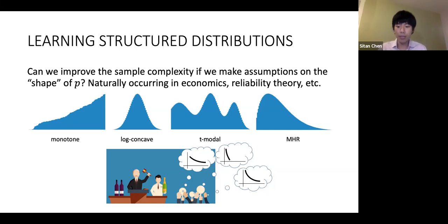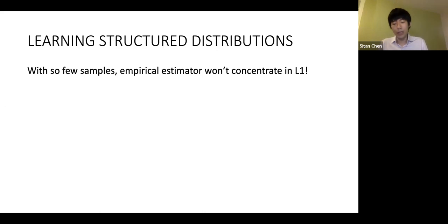Before I talk about robustness, let's review what's known about learning structured distributions in the classical vanilla IID clean data case. If I just draw IID samples from such a structured distribution, the point is that if I use samples that are sublinear in the domain size, I can't hope for the empirical estimator to concentrate well enough in L1.